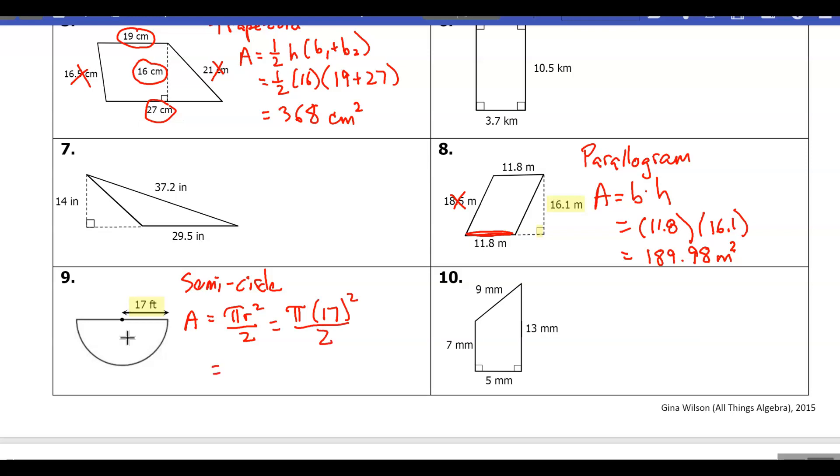Now in your calculator, if you have a pi button that's the best one to use. If you don't, you can estimate it with 3.14, but I'm going to use pi - we'll get a little bit better, more accurate answer. If we use the pi key, we should get, we'll round this to 454, and our unit is feet, so it's going to be square feet.